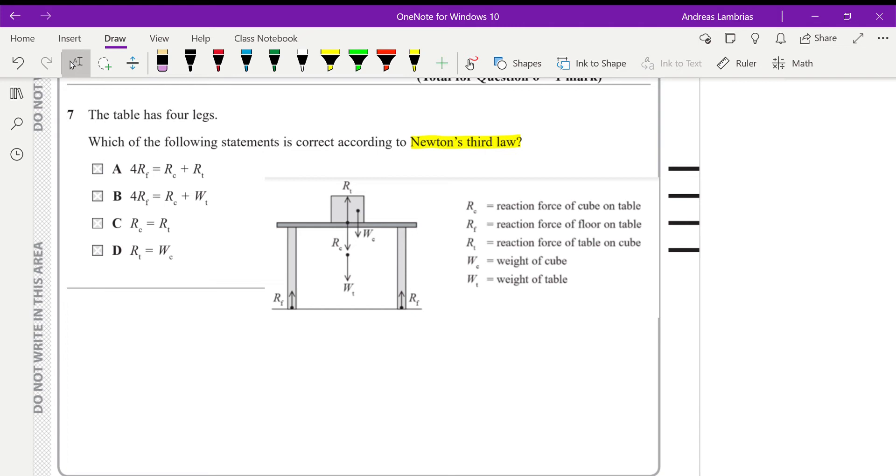Starting from option D. Option D is saying that the reaction force of the table on the cube is equal to the weight of the cube. Now this is a correct equation in terms of forces, but both of these are acting on the cube. So even though it's a correct equation, it's not a pair of forces based on Newton's third law because they're acting on the same object. So definitely not D.